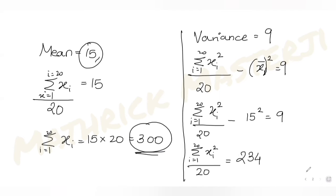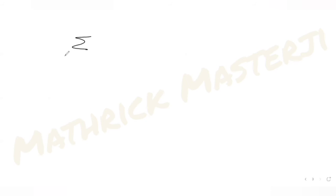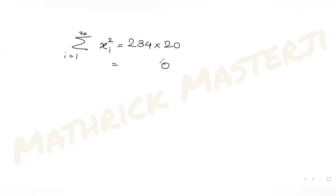Multiplying by 20 gives us Σxi² (from i=1 to 20) = 234 × 20 = 4680.